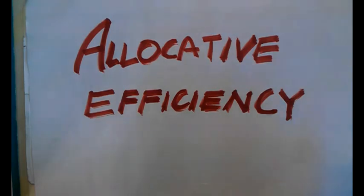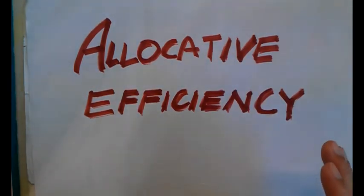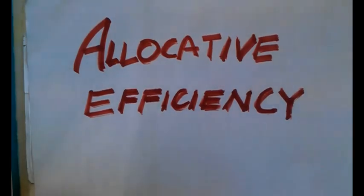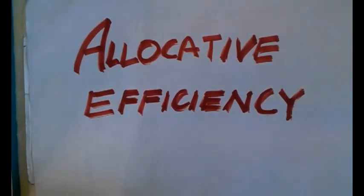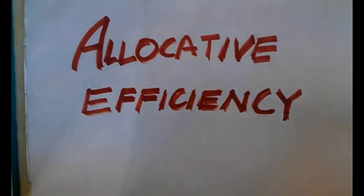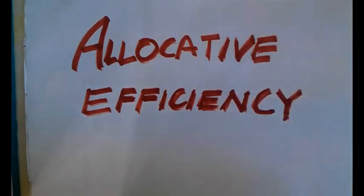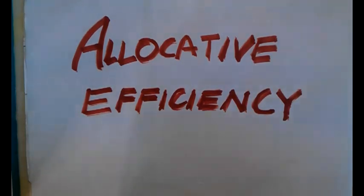Today we are still on general equilibrium and we'll be talking about allocative efficiency. We're almost at the end of micro, and after this we'll be transitioning into macro. I hope it has been a great journey for you guys for the first half of the intro to economics unit, and I hope Quickonomics managed to make it easier. Let's finish this off with a bang.